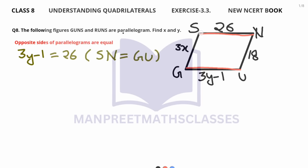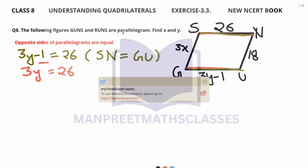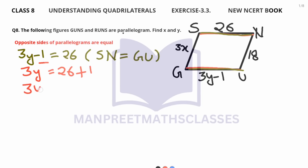Using the property that opposite sides of a parallelogram are equal, SN equals GU. We write their values and transfer minus 1 to the right-hand side — a negative number transferred becomes positive — so 26 plus 1 gives 27. So 3Y equals 27. Since 3 is in multiplication, we divide: Y equals 27 divided by 3, so Y equals 9.